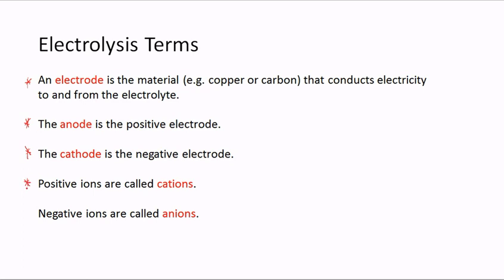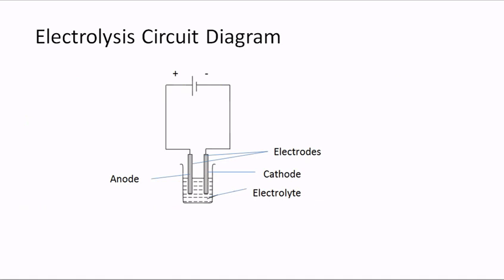Positive ions in an electrolyte are called cations and negative ions are called anions. In an electrolysis diagram we have a cell, two electrodes, and the electrolyte in a container. The electrode connected to the positive terminal is the anode, and the electrode connected to the negative terminal is the cathode.